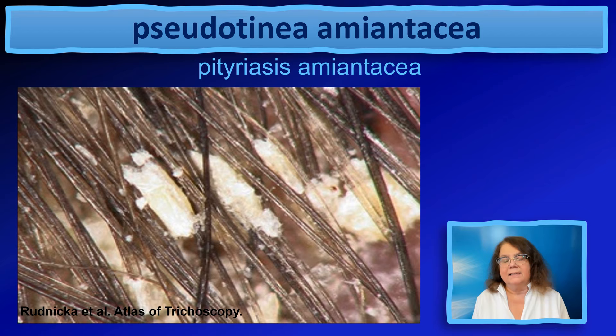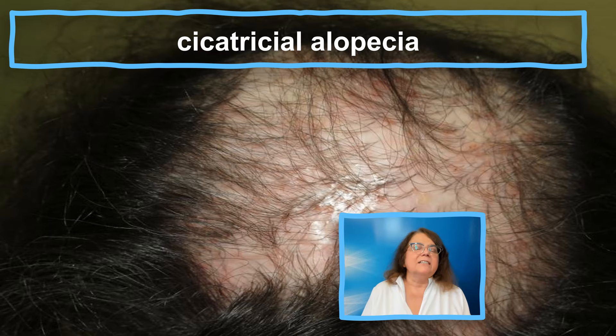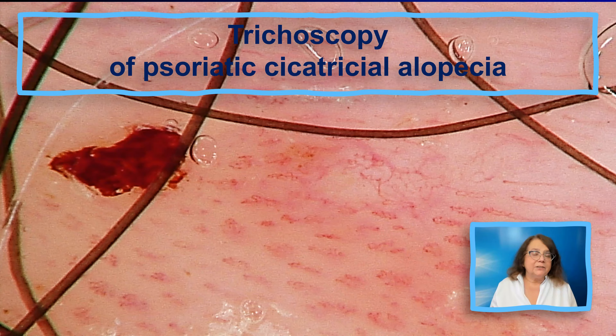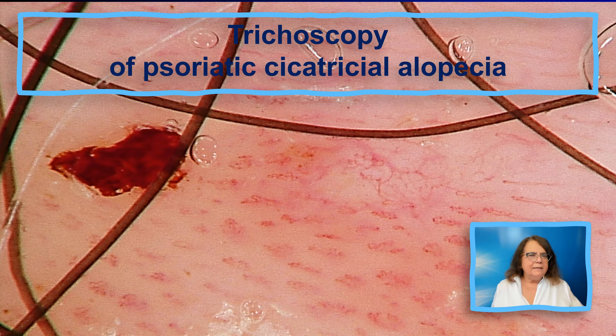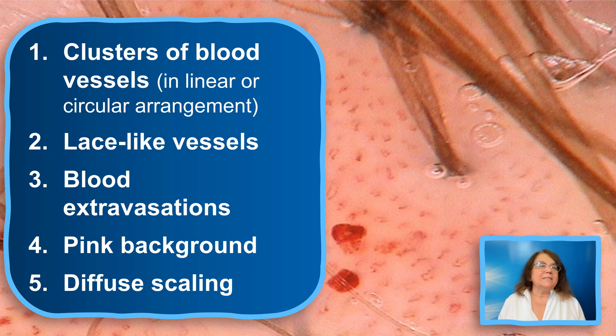This is a clinical image of cicatricial alopecia in the course of psoriasis — an image of psoriatic cicatricial alopecia. Trichoscopy in this case shows an area with no follicular openings and no dots, indicating that most probably there are no hair follicles. There are multiple blood vessels, partly arranged very regularly; in some parts these are lace-like blood vessels, and there is also an extravasation or possibly just a sign of mechanical scratch.